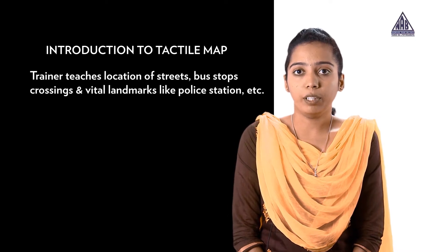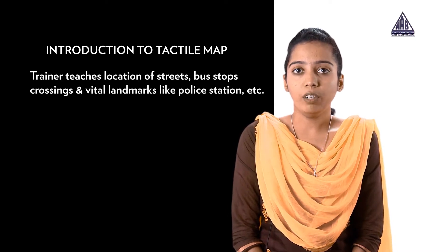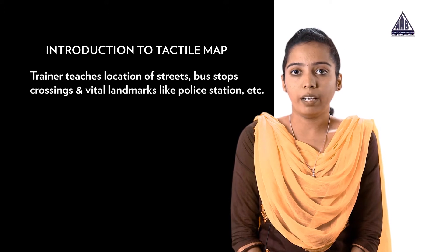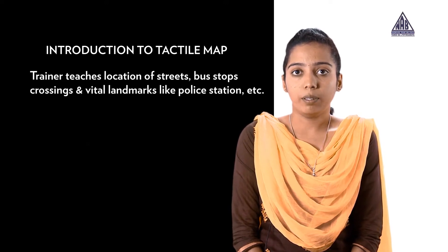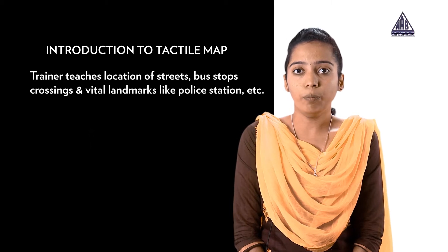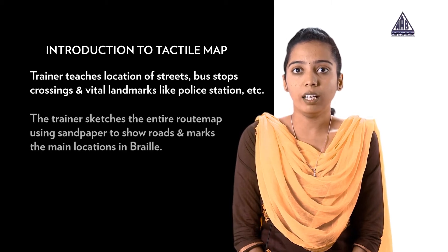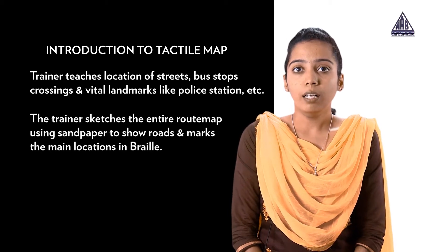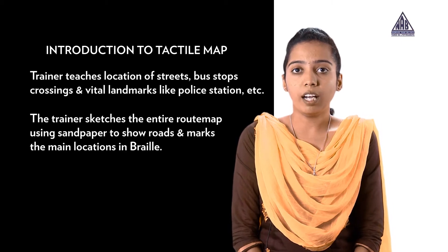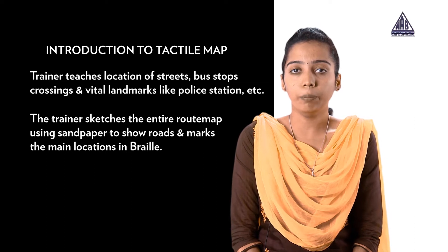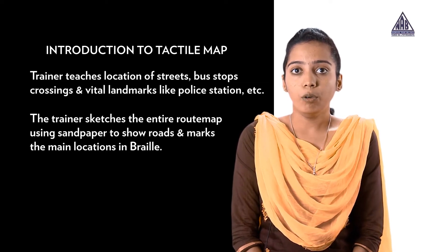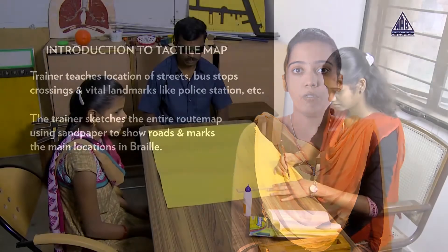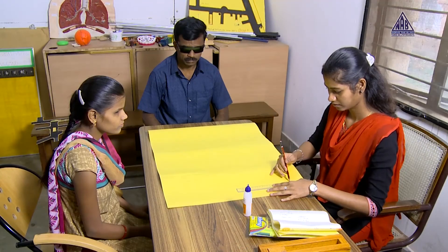We use the route map to show you the most important map. We use the real canvas to cross paths, and a very simple route map. It's a simple route map. Second, you use the cardboard sheet.